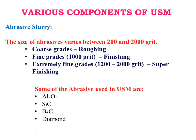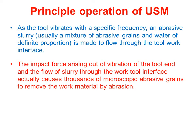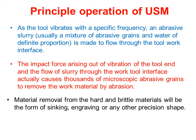The abrasives used in USM are Al2O3, SiC, B4C, and diamond. Regarding the principle of operation: as the tool vibrates at a specific frequency, an abrasive slurry is made to flow through the tool-work interface. The impact force arising out of vibration of the tool and the flow of slurry through the work-tool interface causes thousands of microscopic abrasive grains to remove the work material. Material removal from hard and brittle materials takes the form of sinking, engraving, or any other precision shape.